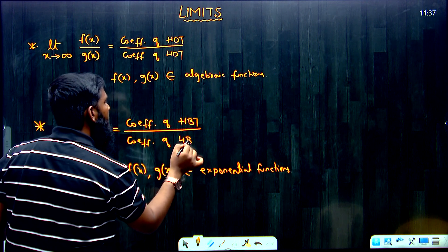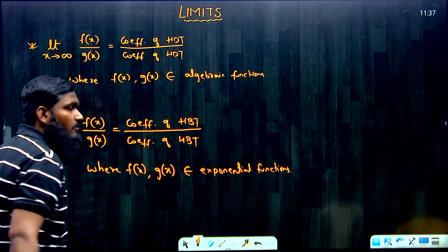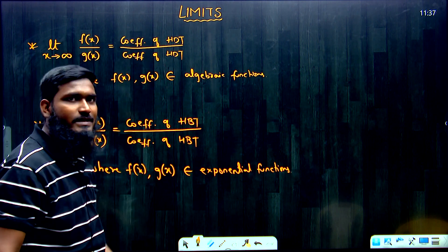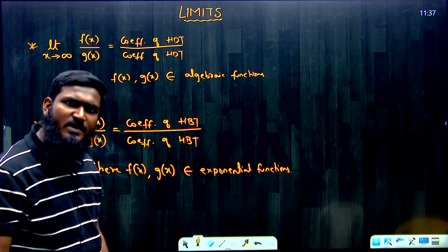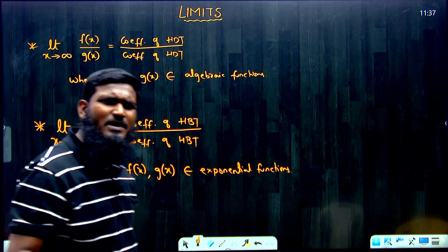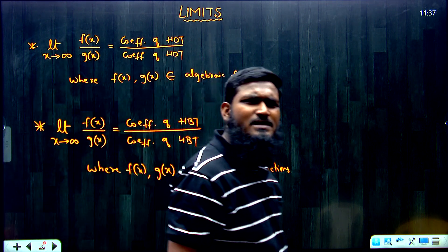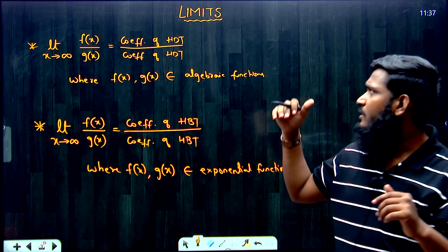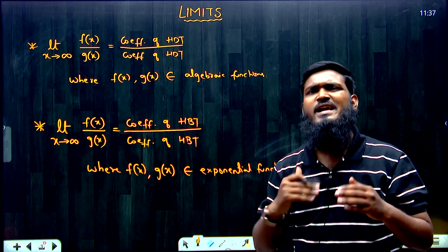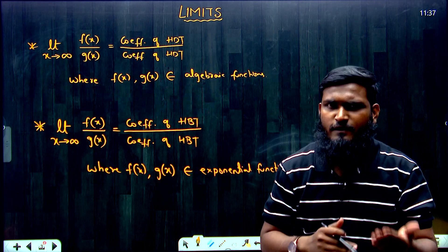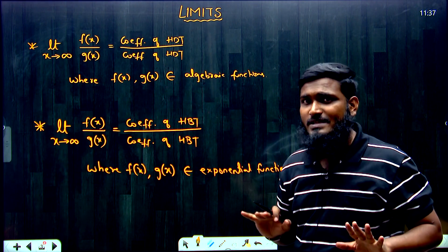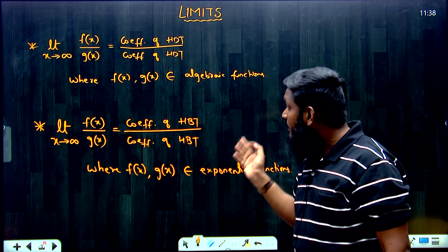Coefficient of highest base term — that is it. Highest degree term versus highest base term. We understood highest degree: x squared, x cubed, x to the power 5, x to the power 10 — that is the meaning of highest degree.